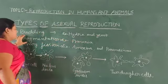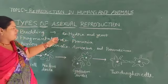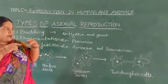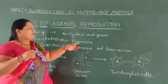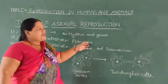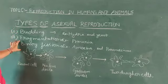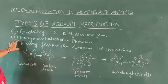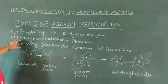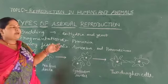In fragmentation, found in Planaria, the body breaks into fragments. The fragment divides into two parts and a new Planaria develops. Next is binary fission. Binary means two, and it is found in Amoeba and Paramecium.